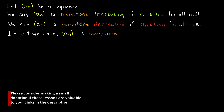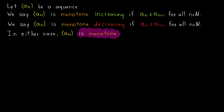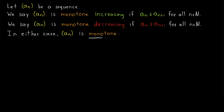As we continue our study of sequences, we'll find that one of the very nice properties a sequence can have is to be monotone. Let's spend some time today talking about what a monotone sequence is. Breaking down the word should make it pretty clear: mono meaning one, and tone meaning the general feel or direction. We can think of a monotone sequence as having one direction — either increasing or decreasing.